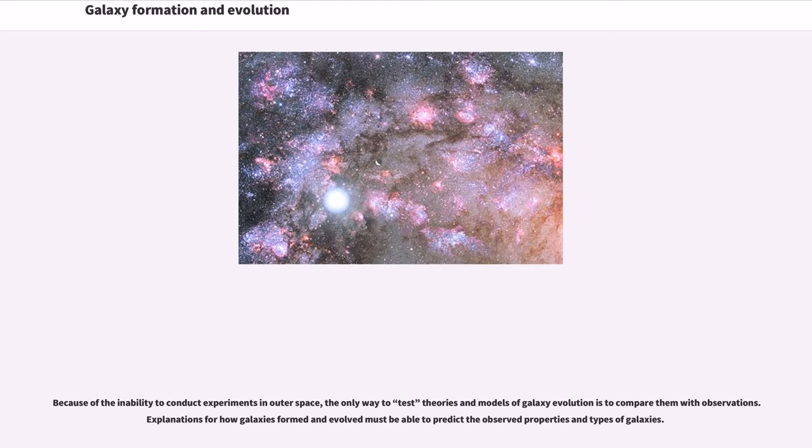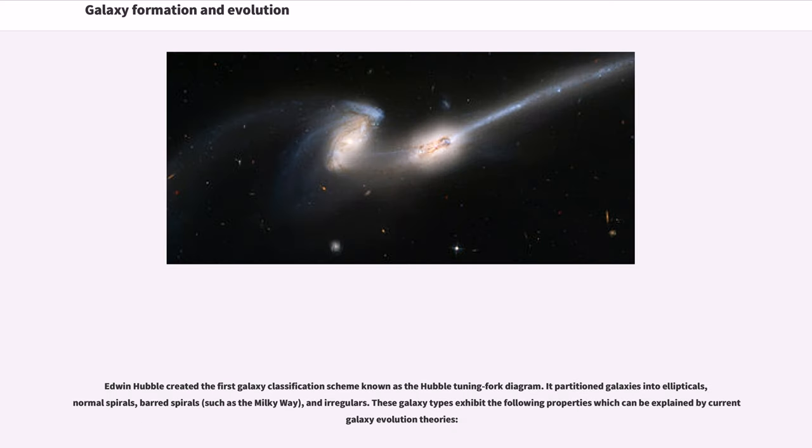Because of the inability to conduct experiments in outer space, the only way to test theories and models of galaxy evolution is to compare them with observations. Explanations for how galaxies formed and evolved must be able to predict the observed properties and types of galaxies. Edwin Hubble created the first galaxy classification scheme known as the Hubble Tuning Fork Diagram.